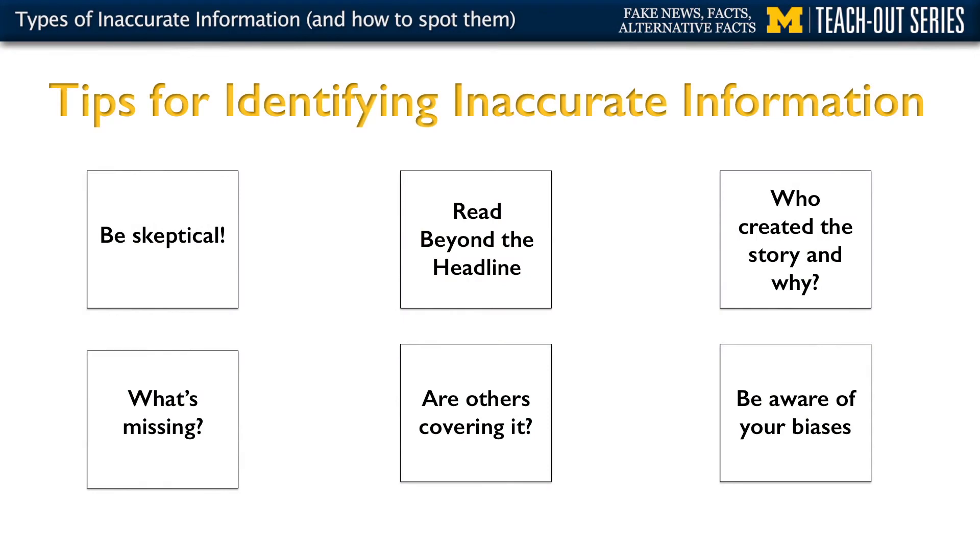Those are the seven types of inaccurate information. I want to conclude this segment by providing a few tips for identifying inaccurate information. The first one is to be skeptical and be aware that many pieces of information are spread online with the intention to deceive people. So if you see something that looks not exactly real or not exactly credible, be skeptical of it. Do a little more research and find out if it's real or not.